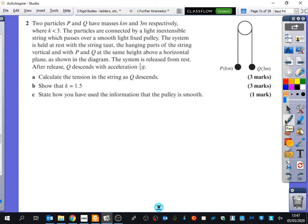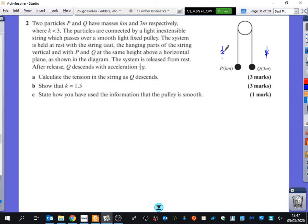So two particles, P and Q, have masses Km and 3m respectively, where K is less than 3. If K is less than 3, what does that tell us? Good. Q is going to be moving downwards, which means that P must be moving upwards.